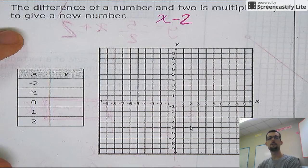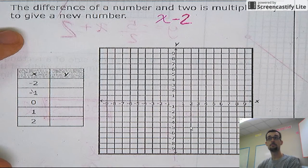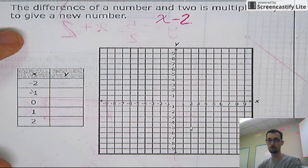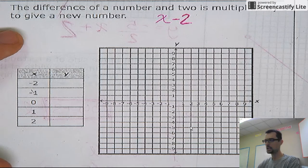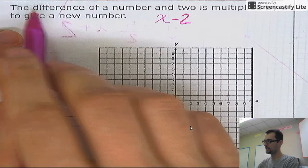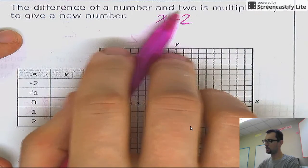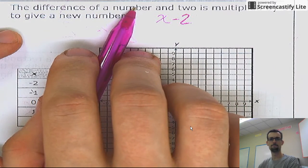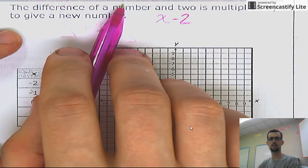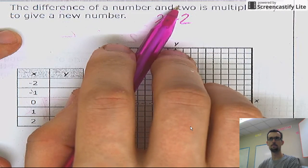Okay, so for instance, if you think of five, the difference between five and two would be five minus two would be three. It's possible that it's saying two minus the number. So the difference of one and two would be one.